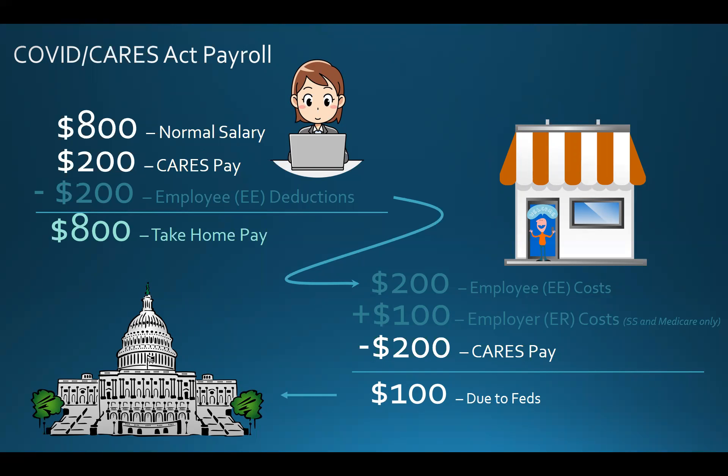The reason that this impacts OVP grants is because the government has already paid for 100% of the CARES pay. An agency cannot have costs paid by two funding sources.